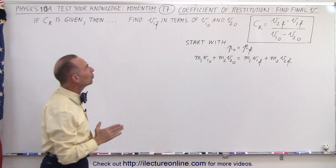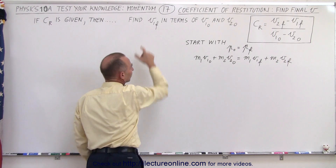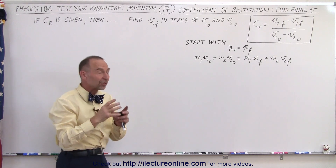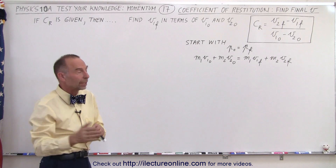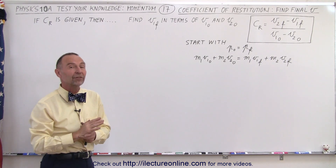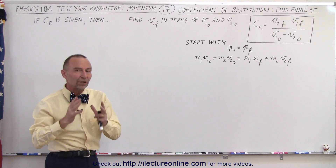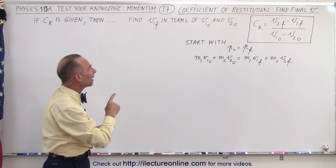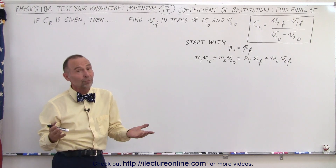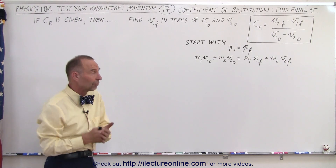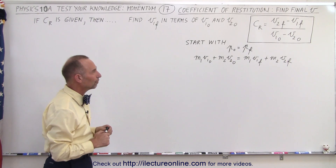What we're trying to do here is come up with an equation that defines v1 final — the velocity of object number one final — in terms of the initial velocities only, not in terms of the final velocity of the second object. We're isolating the velocity of one of the two objects, assuming we know the initial velocities of both objects and we're given the coefficient of restitution.